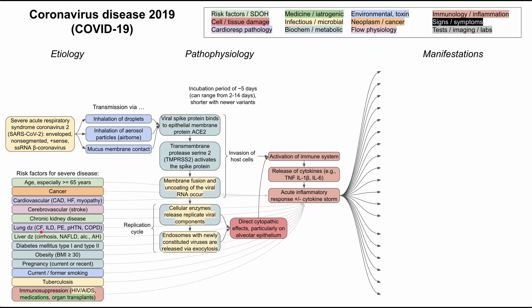Liver diseases like cirrhosis, non-alcoholic fatty liver disease, alcoholic liver disease, and autoimmune hepatitis are risk factors. Diabetes mellitus — both type 1 and type 2 — obesity with a BMI of 30 or more, current or recent pregnancy, current or former smoking, concurrent or previous tuberculosis infection, and immunosuppression are all risk factors. Immunosuppression can come from HIV/AIDS, immunosuppressive medications, and organ transplants.